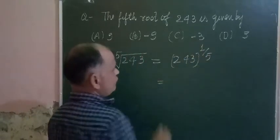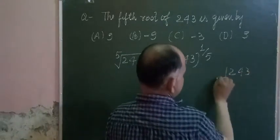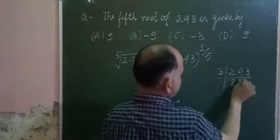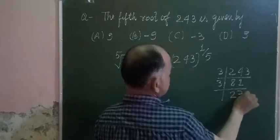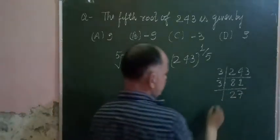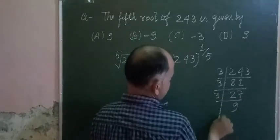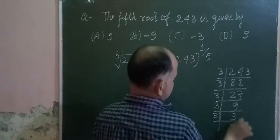Now we factor 243. If you factor 243, we divide it by 3, 3 goes into 243 to give 81. Now again by 3, 3 goes into 81 to give 27. Again by 3, 3 goes into 27 to give 9, and again by 3, 3 goes into 9 to give 3, and finally 3 goes into 3 to give 1.